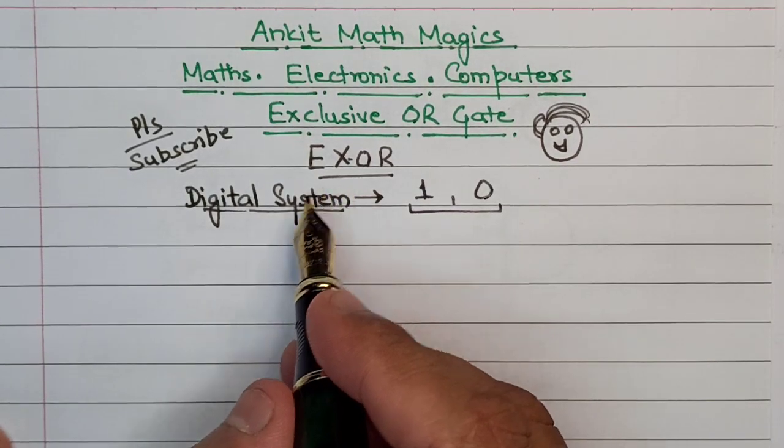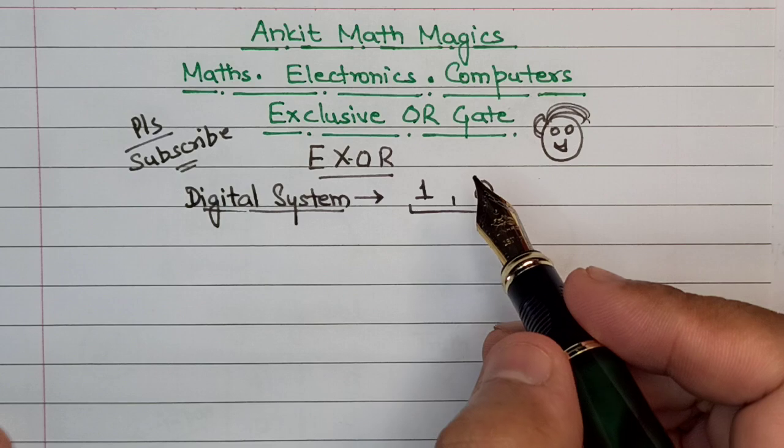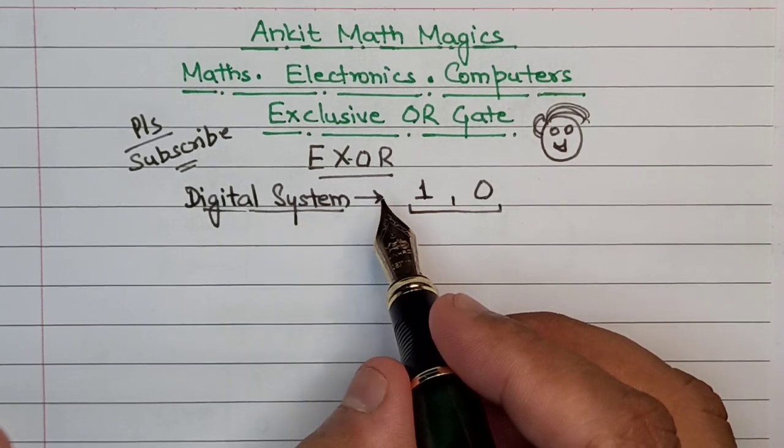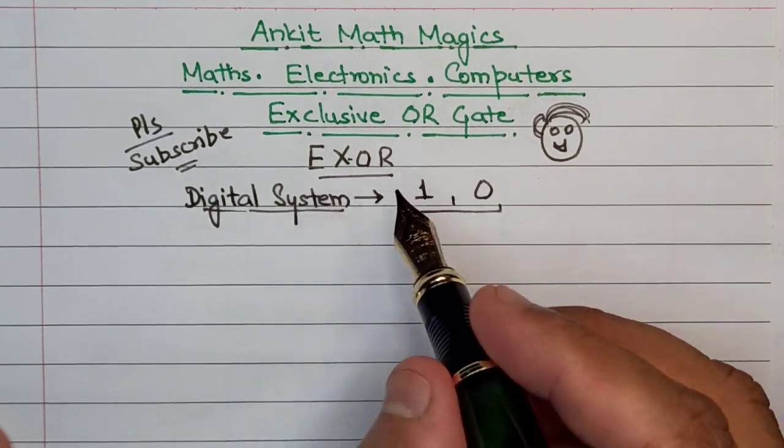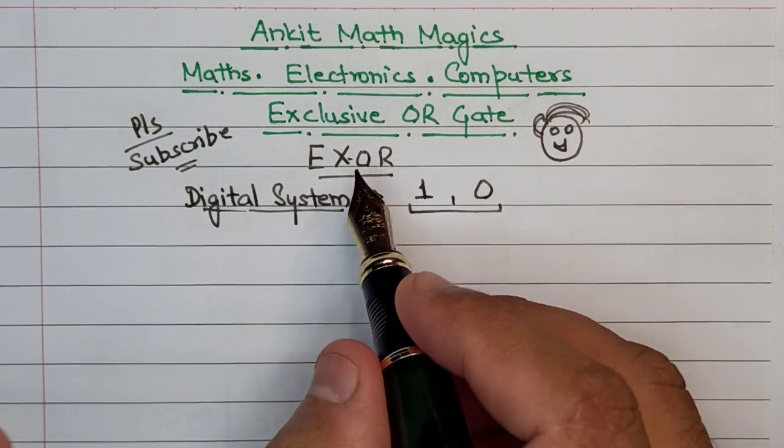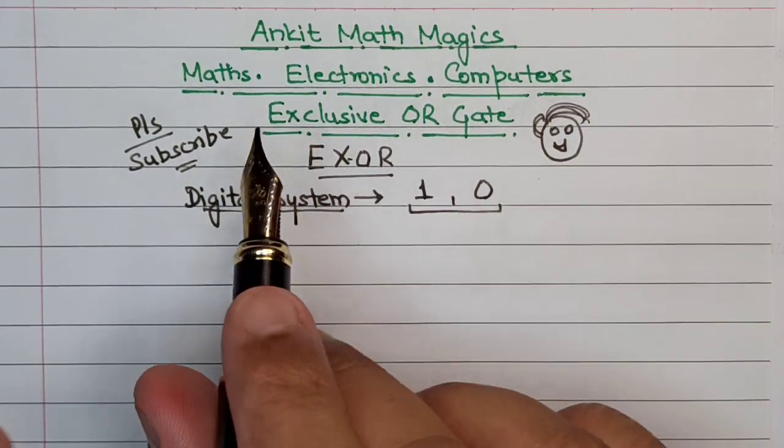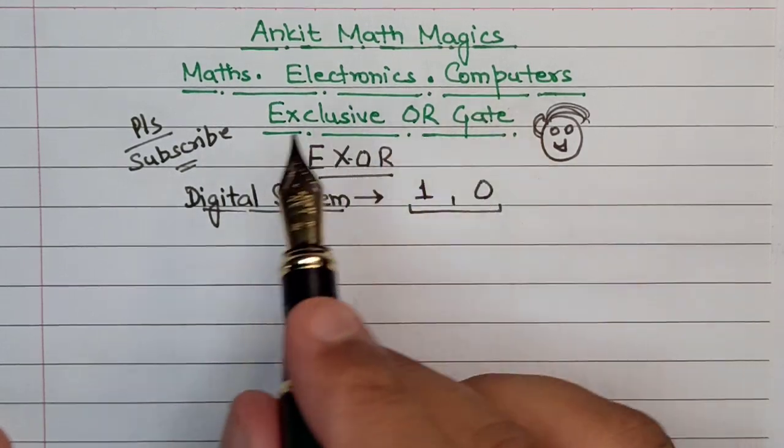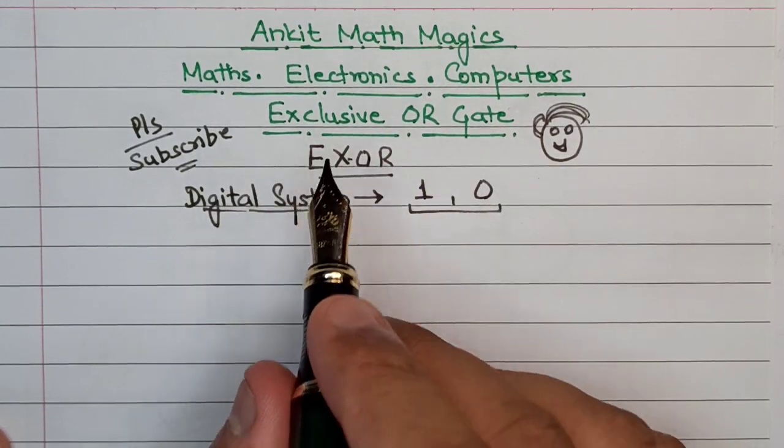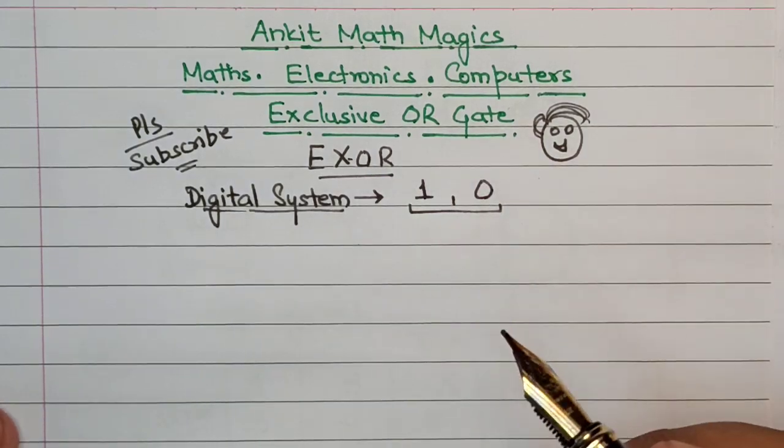The Exclusive OR and Exclusive NOR gates are basically combinations of other logic gates: the AND gate, OR gate, and inverter. However, because of their fundamental importance in many applications, these two gates are treated as basic logic gates and they have a unique symbol.